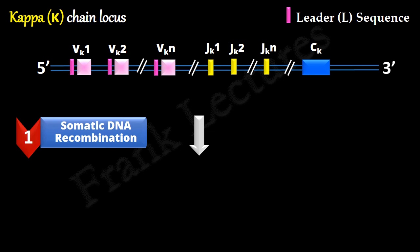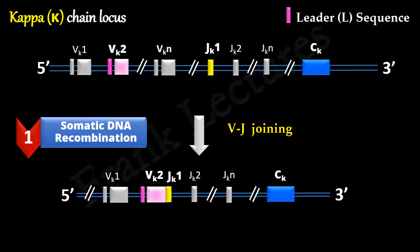So in the first step, a randomly selected V gene segment is joined to a J gene segment which is also randomly selected. Let's say, second V gene segment is joined to first J gene segment. To maintain our attention on the rearranging gene segments, other gene segments are shown faded. This VJ joining creates an exon that encodes the whole light chain V region.